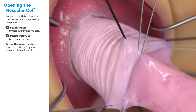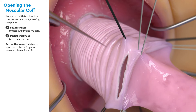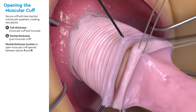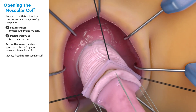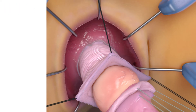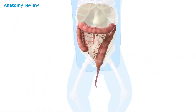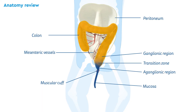Next, a partial thickness incision is made circumferentially between planes A and B. This separates the mucosa from the muscular cuff, allowing entry into the peritoneal cavity and visualization of the mesenteric vessels. At this point in the operation, the transition zone has been mobilized past the peritoneal reflection and is now just interior to the muscular cuff. Note the position of the blood supply of the mesentery.